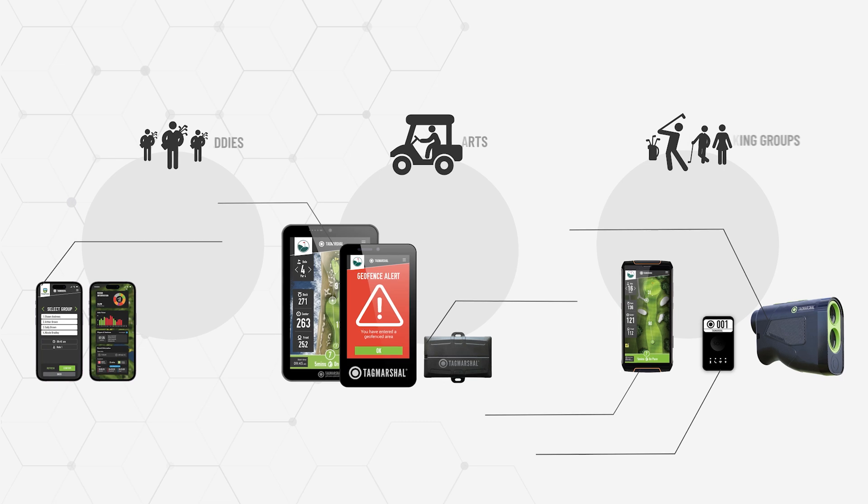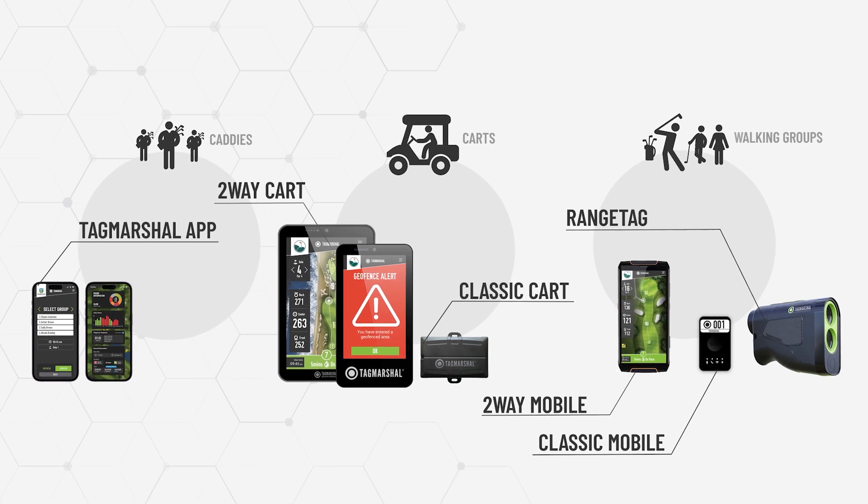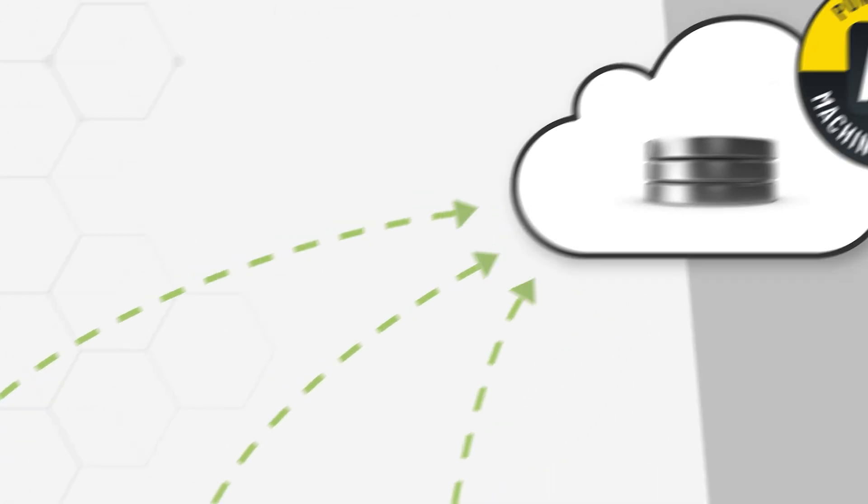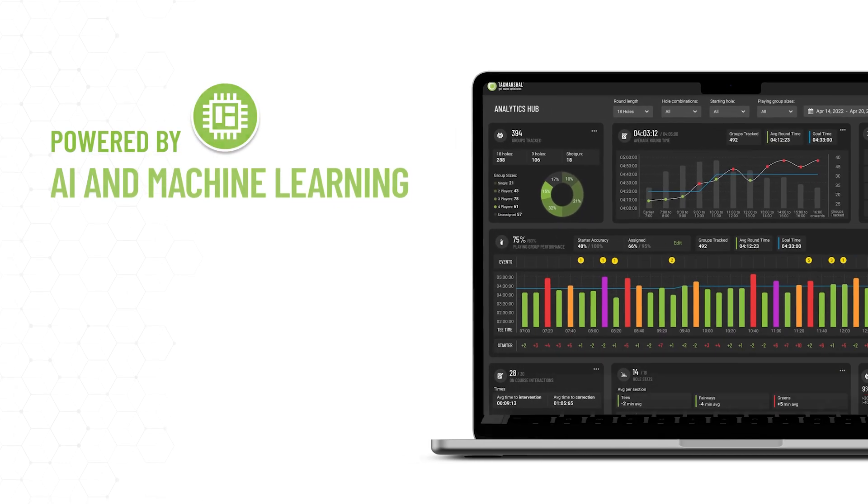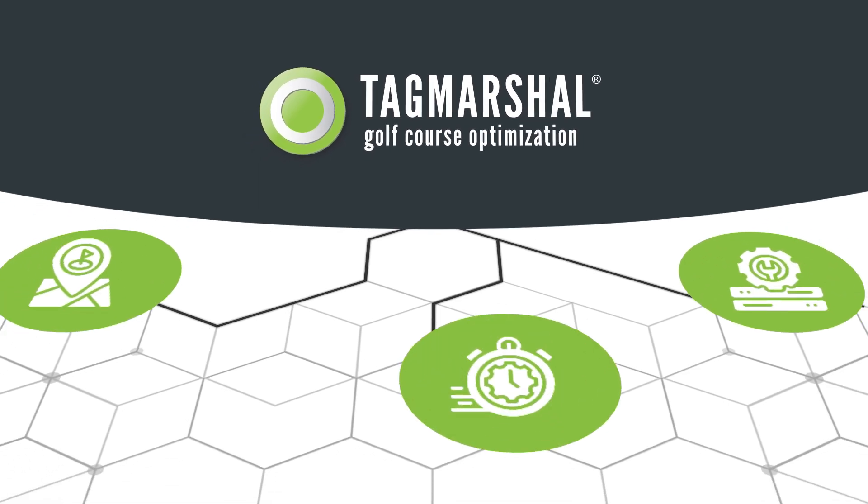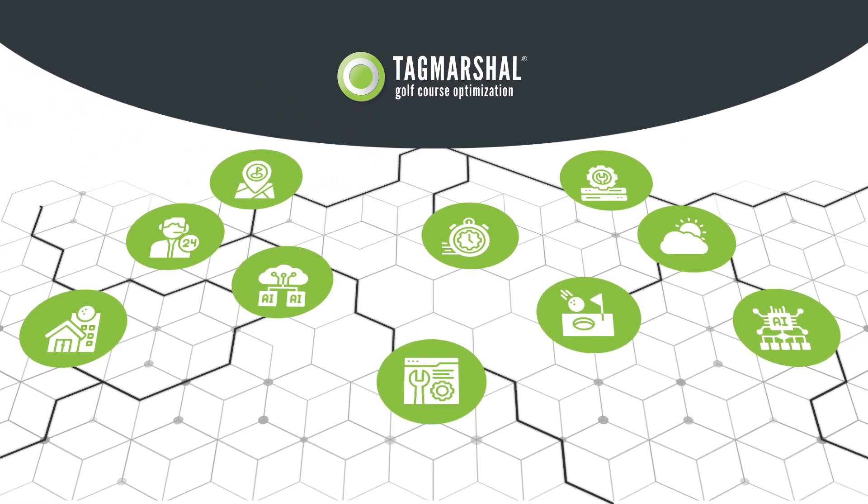As players move around the course, the GPS data collected by the GPS tracking devices is sent to Tag Marshall's secure cloud servers. Powerful algorithms process and analyze the data using more than 10 dynamically calculated factors, and convert it into actionable insights.